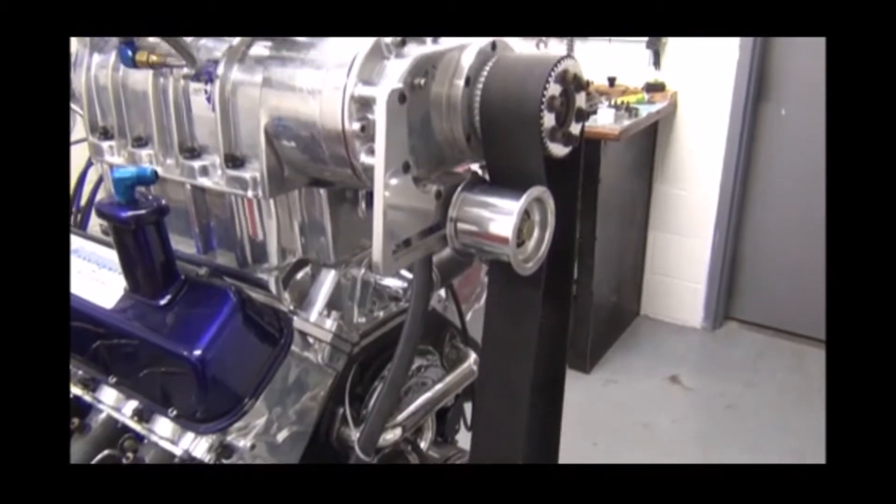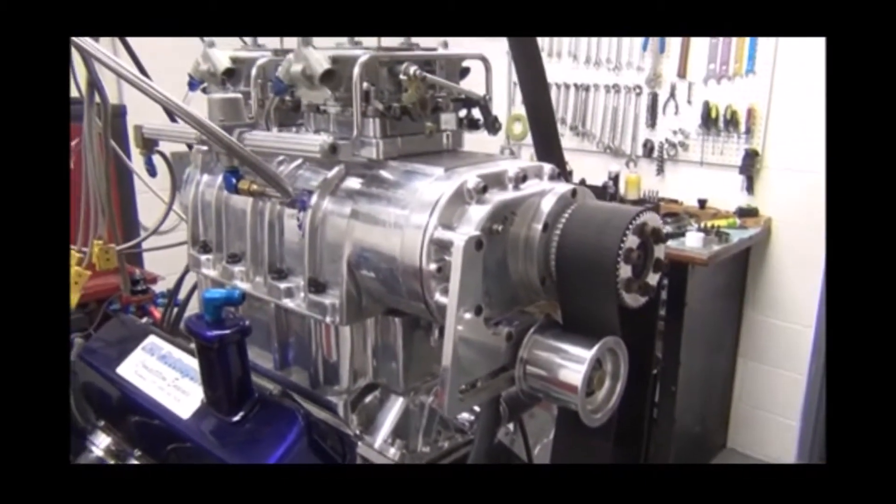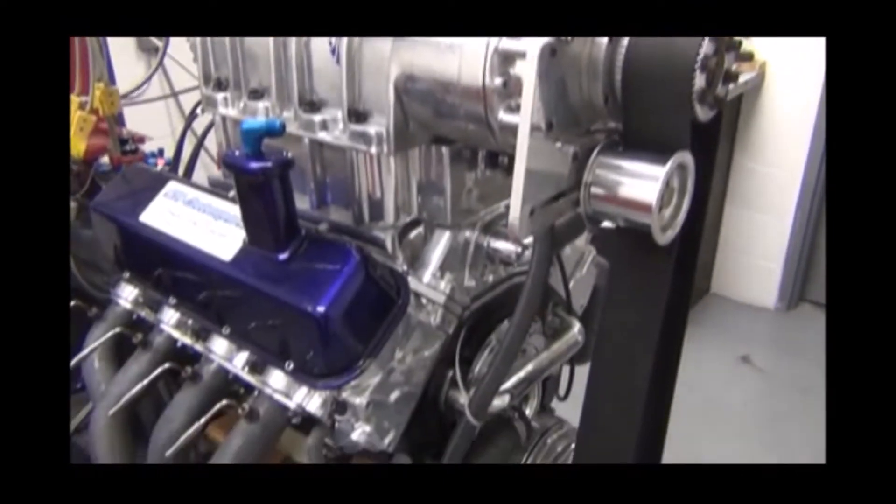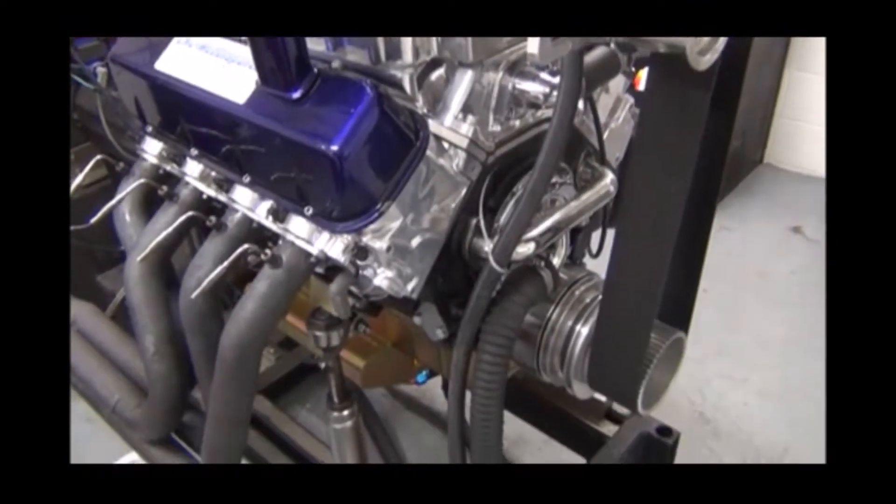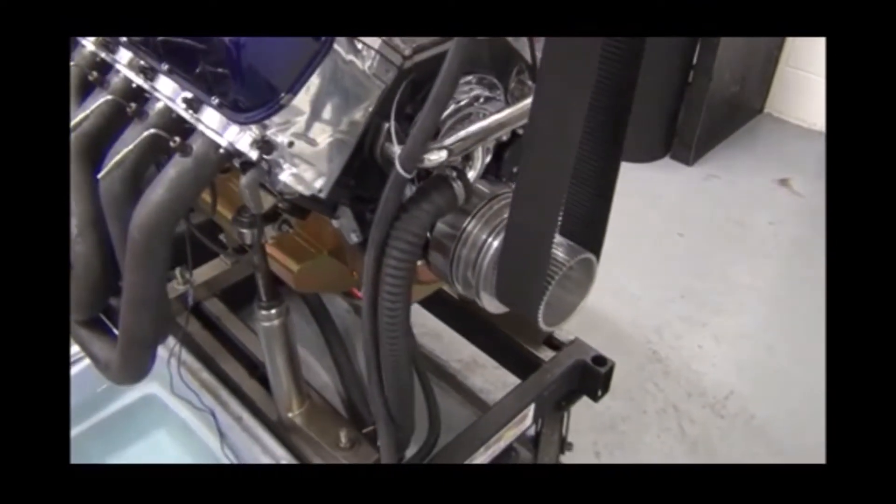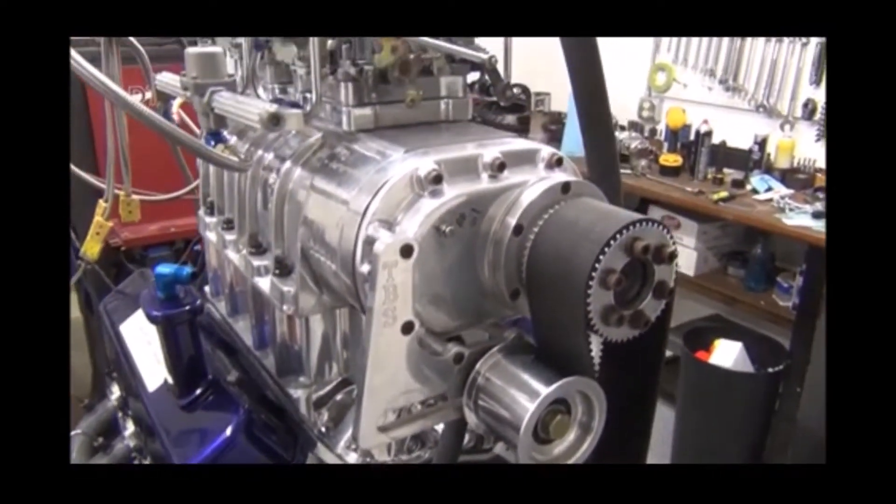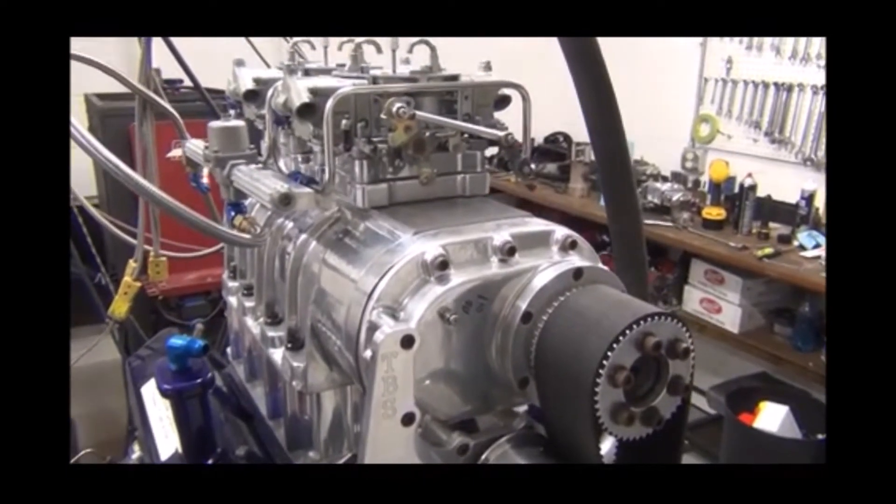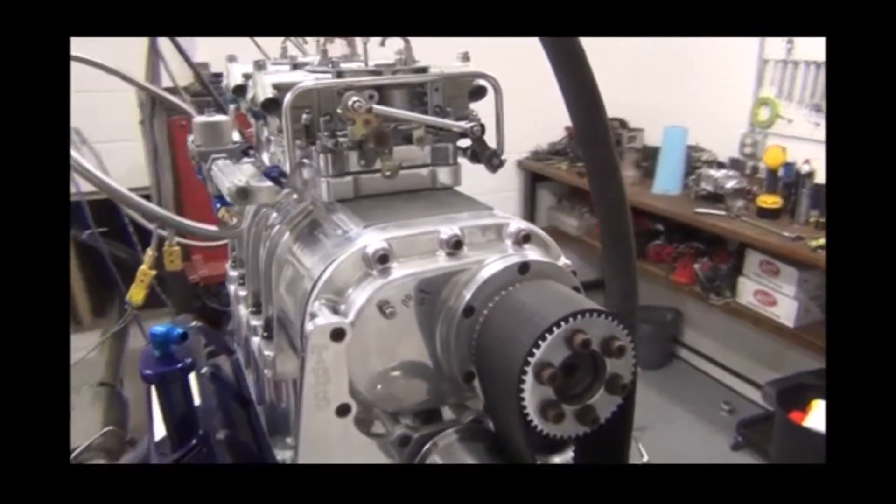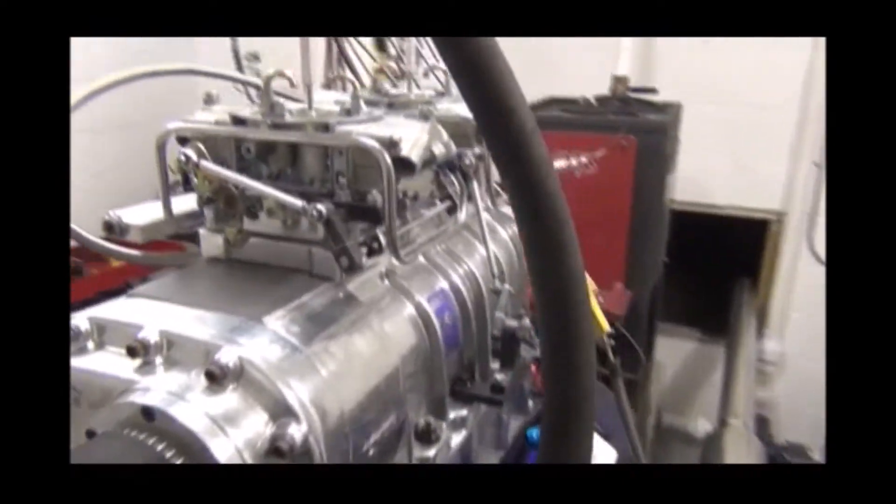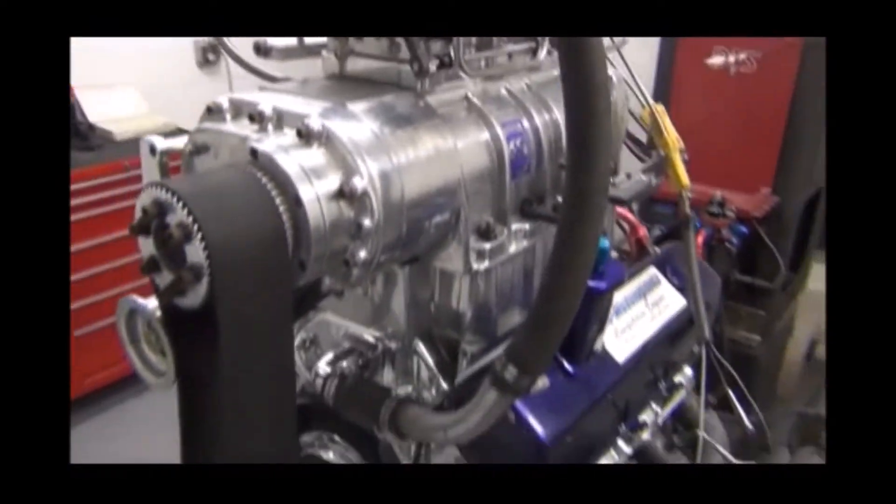It didn't make it very long, so he sent it to us to have it redone. Most of it is all of his parts, besides the short block. We built a brand new short block to use with his heads, his blower, his intercooler, carburetors, and so on. We made a few internal adjustments to make this combination live a lot longer and be a lot more reliable for him, so when he's out on the lake he doesn't have to worry about problems.